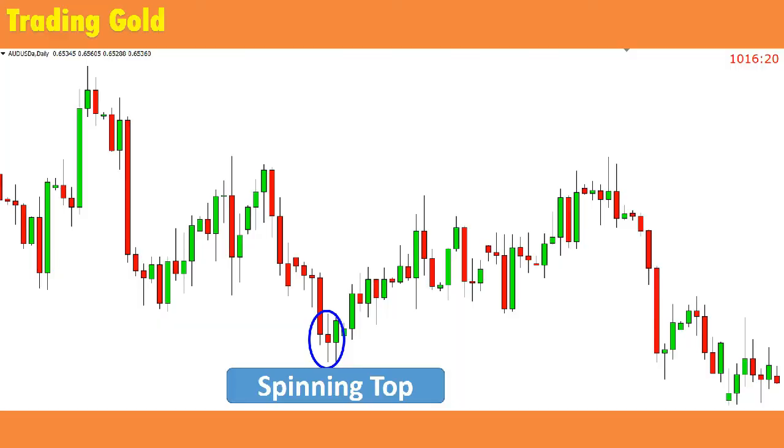If you do spot a spinning top after an uptrend or a downtrend, it may signal a potential reversal. The buying or selling pressure causing the uptrend or downtrend is paused for a moment of indecision, represented by the spinning top, and that lost momentum could signal that the current trend has come to an end.